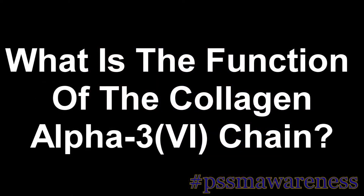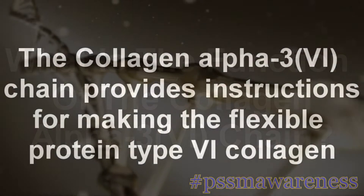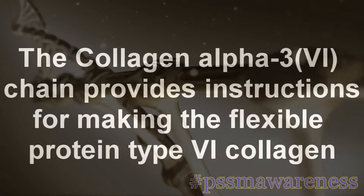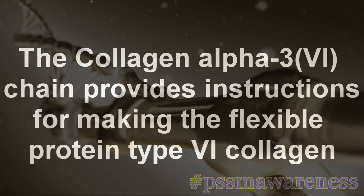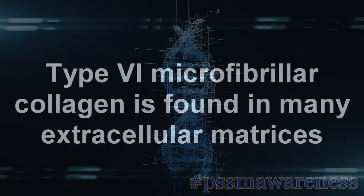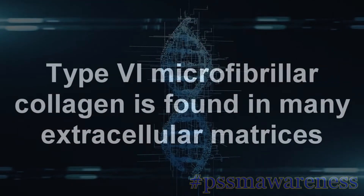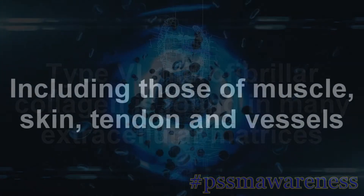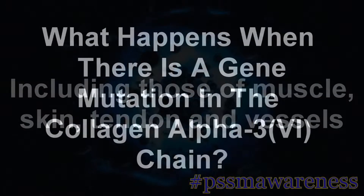What is the function of the collagen alpha 3 chain? The collagen alpha 3 chain provides instructions for making the flexible protein type VI collagen. Type VI microfibrillar collagen is found in many extracellular matrices including loads of muscle, skin, tendon, and vessels.